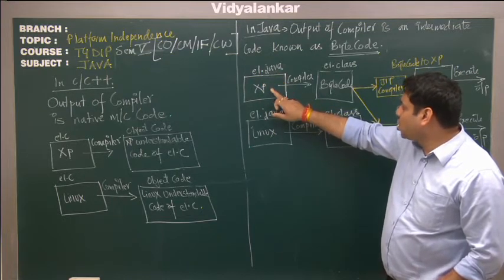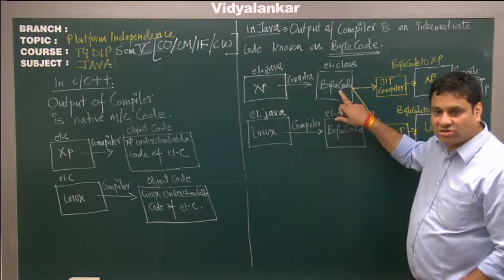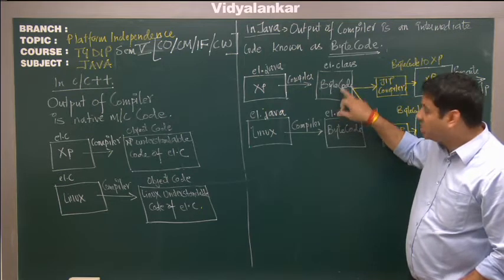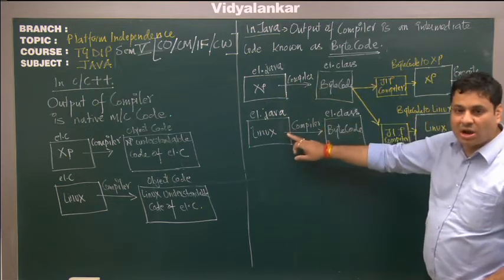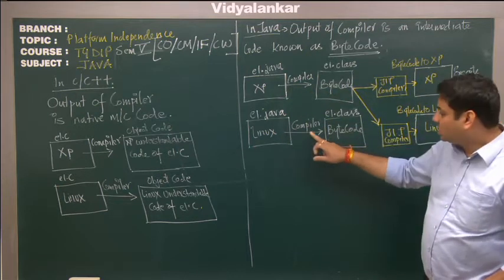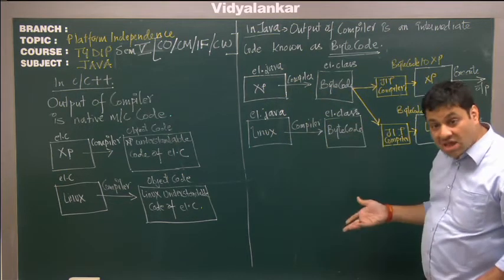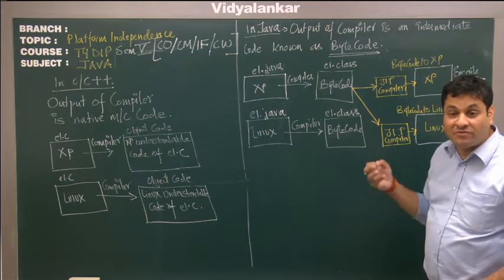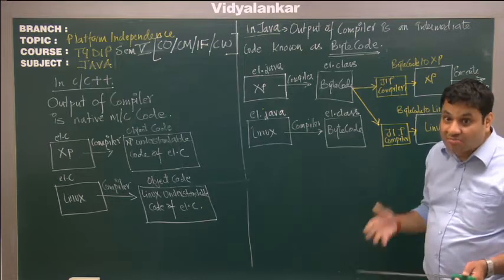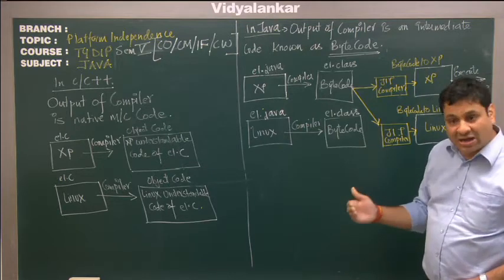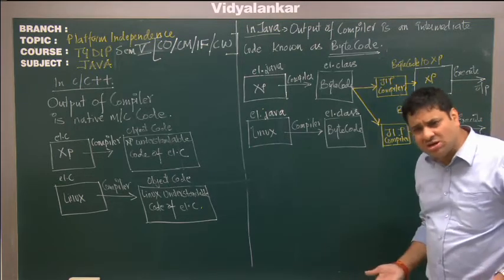So in Java, if we compile, let's say, event.java file on XP operating system, the output is bytecode, that's JVM understandable code with extension .class. And if the same program is compiled on Linux operating system, the compiler output is again bytecode. So what we see here is irrespective of the operating system where we compile the program, output is bytecode. But my machine does not understand bytecode.